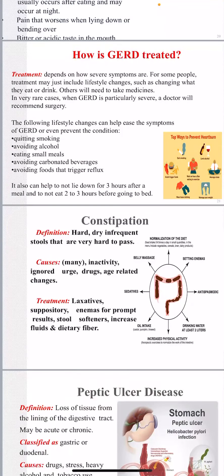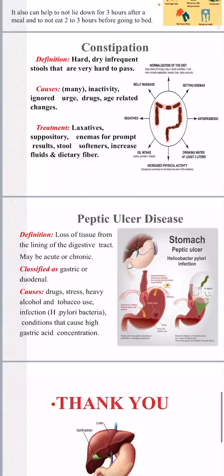Lifestyle changes for gastroesophageal reflux include: quitting smoking, avoiding alcohol, eating small meals, avoiding carbonated beverages, avoiding trigger foods such as spices, and avoiding lying down for three hours after a meal or eating two to three hours before going to bed.